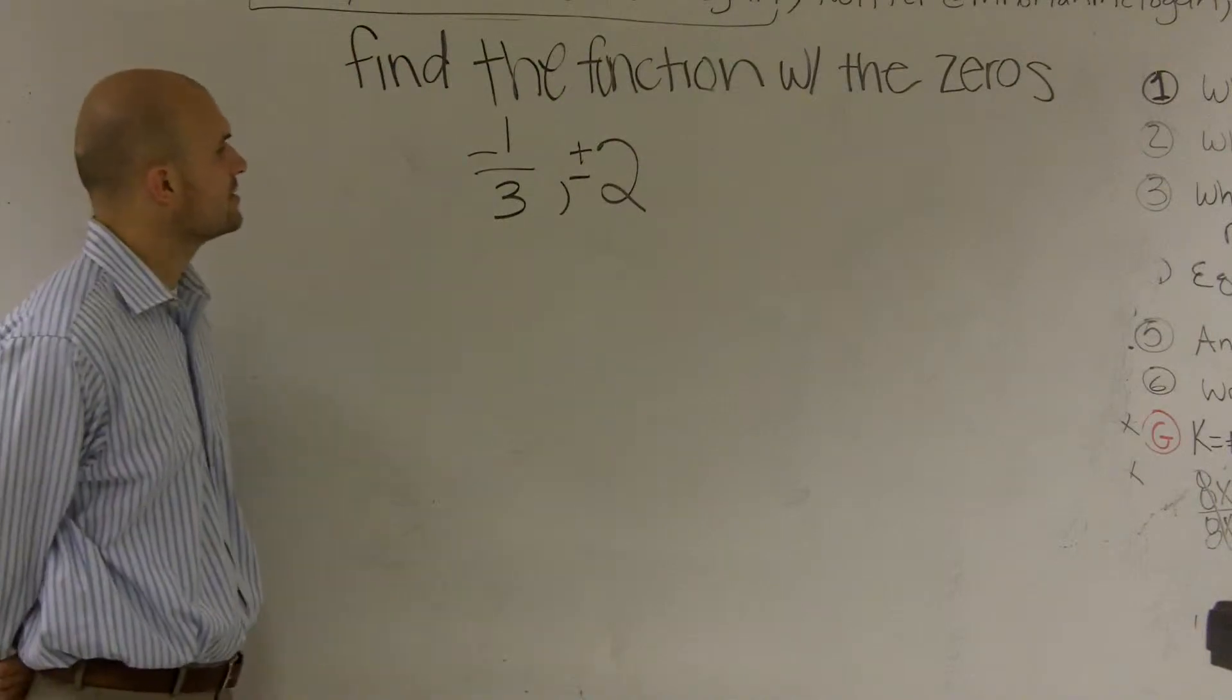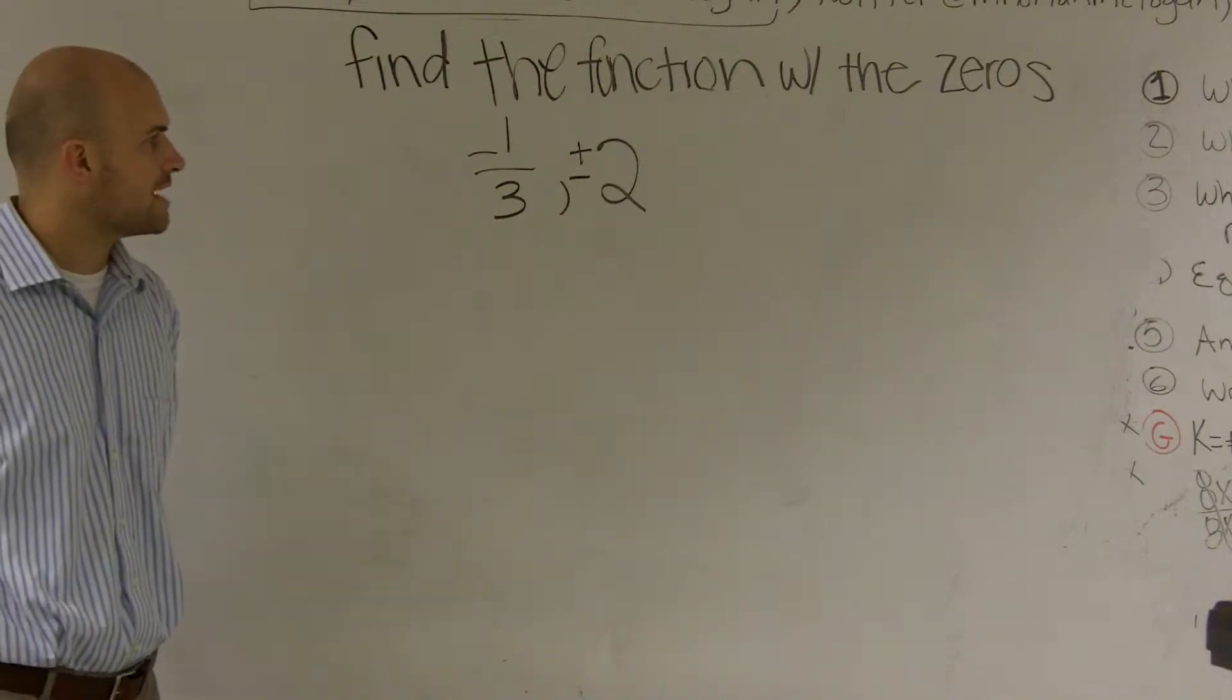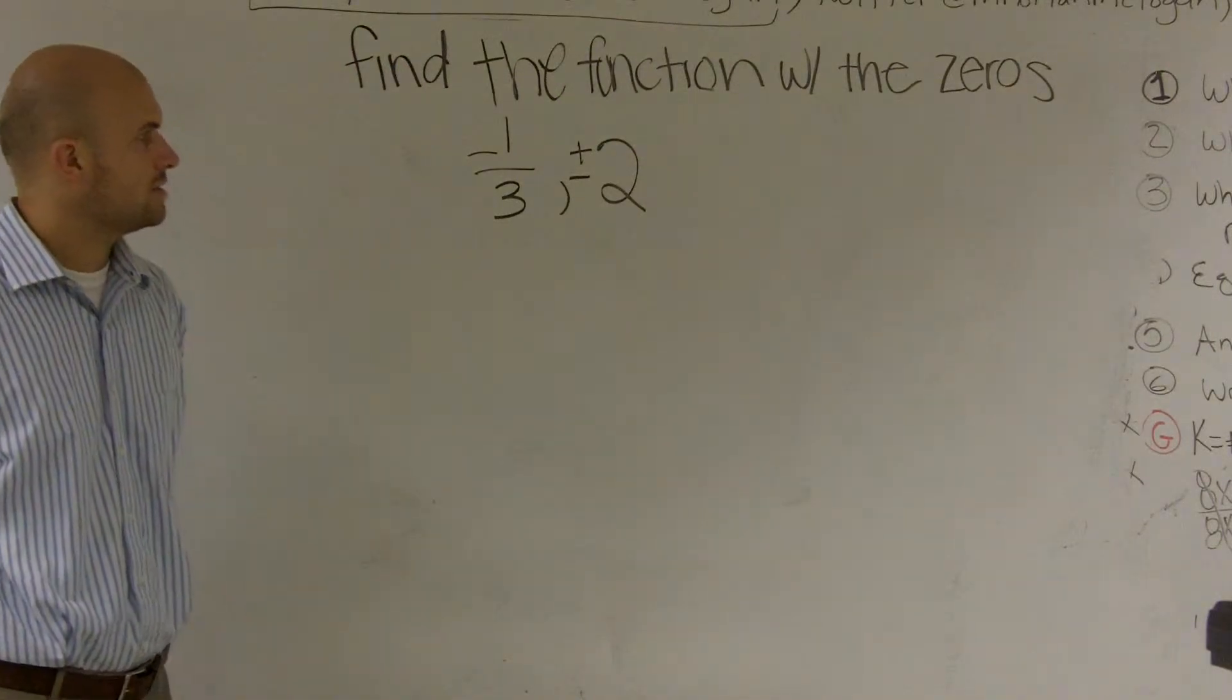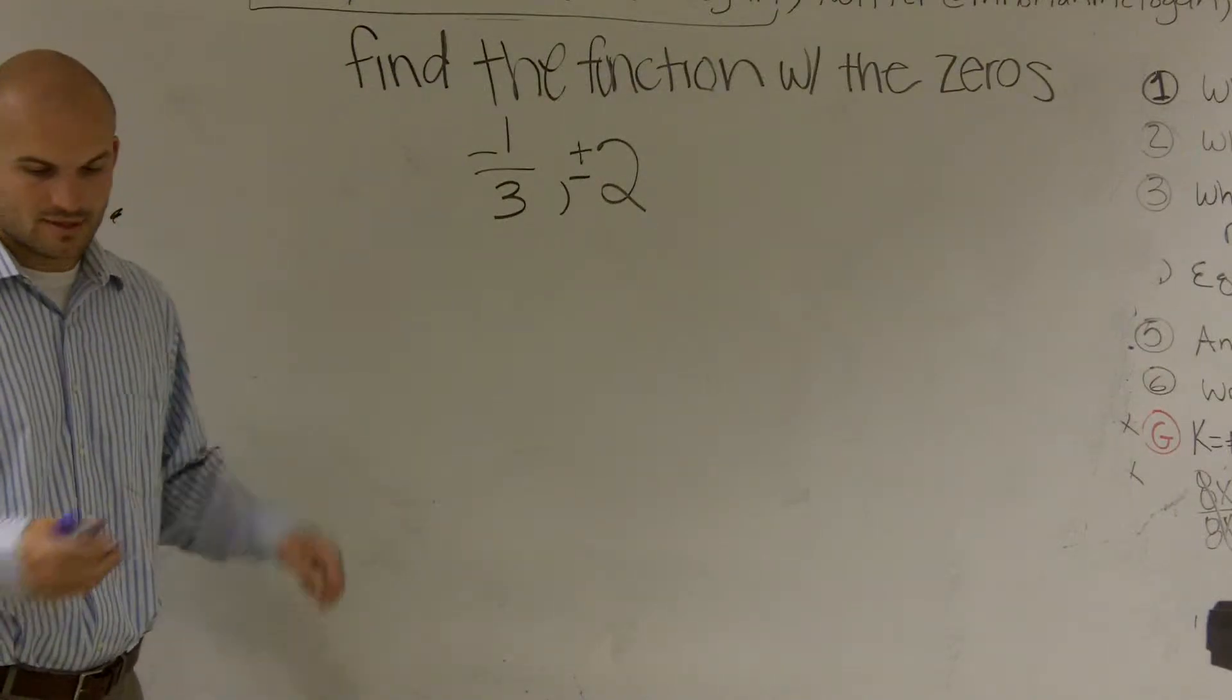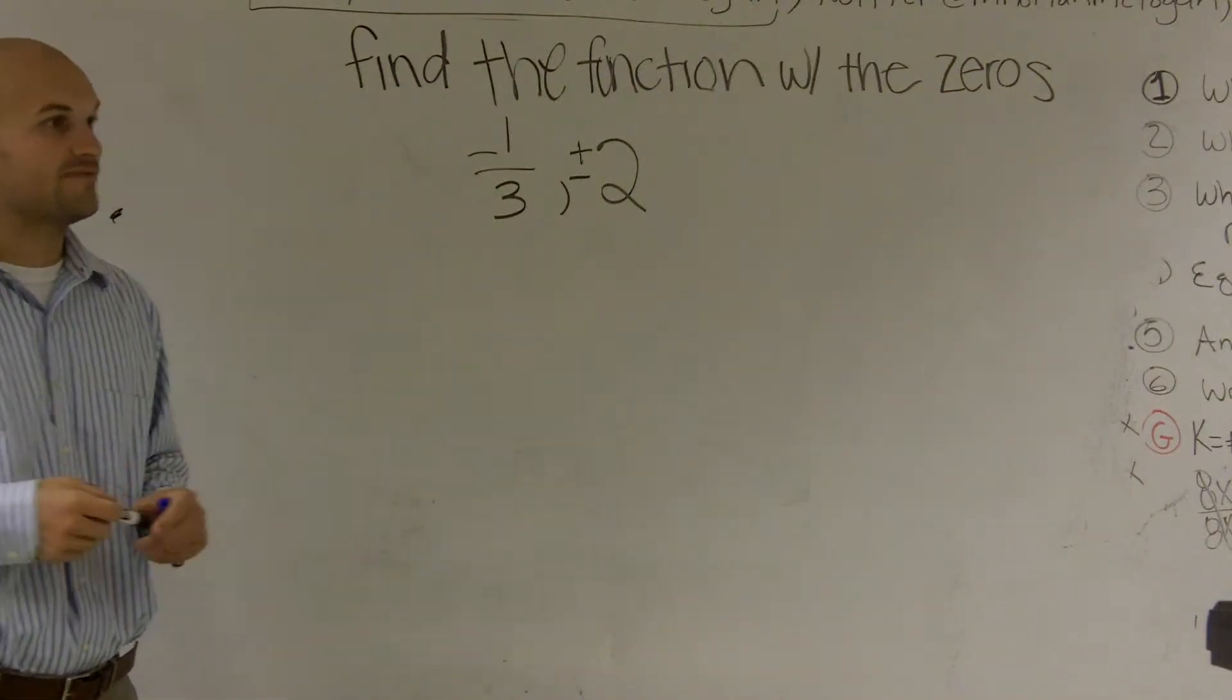So it says find the function with the zeros negative one-third, comma, plus or minus two. So those are our two zeros. And remember, whenever we have zeros, we can write them as factors.